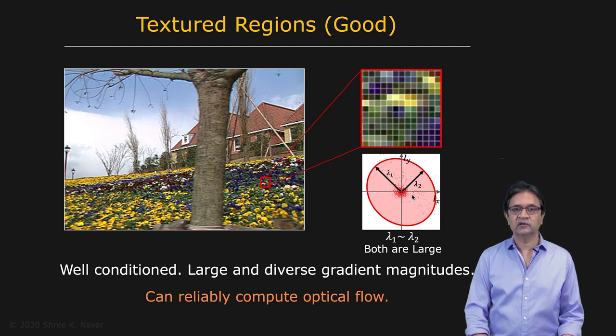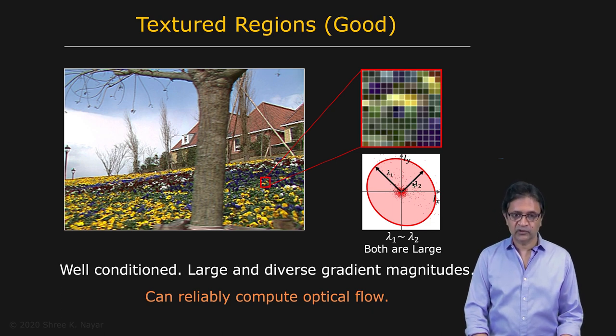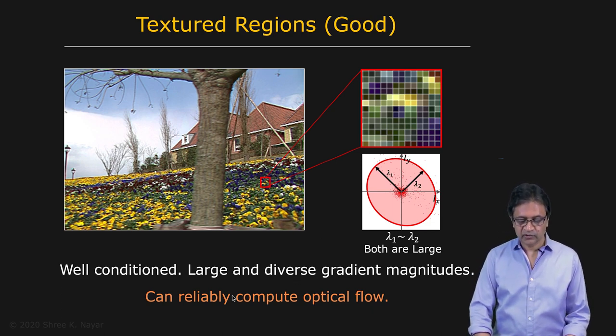And therefore, the matrix A transpose A is well-conditioned and the optical flow that you end up computing is going to be reliable.